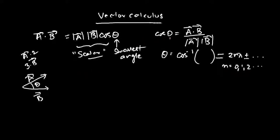So to find the angle between two vectors using the dot product, use: cos(theta) = (a-bar · b-bar) / (mod(a-bar) × mod(b-bar)).